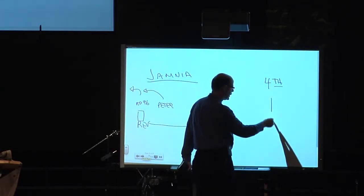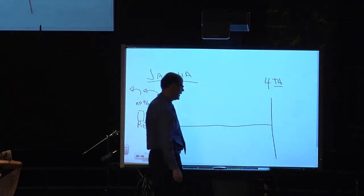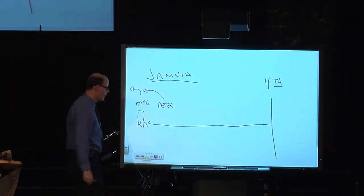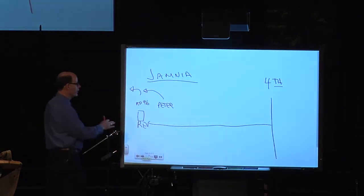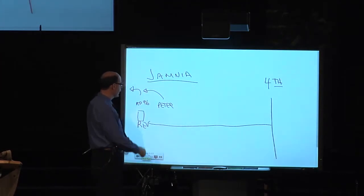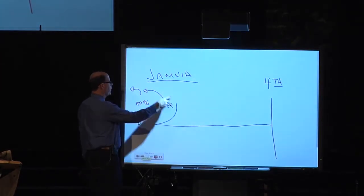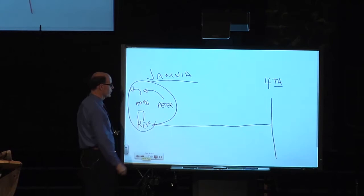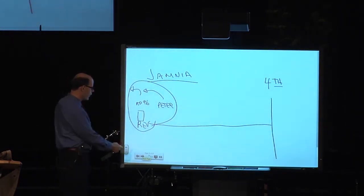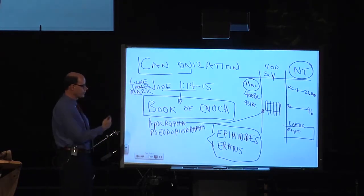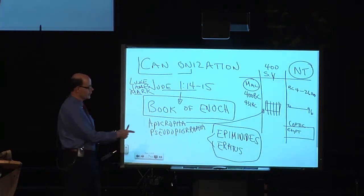Those 27 books were recognized by the church. And finally they had a council that said that they were canonized in about 431 or so. But, and Jamnia before that, but the church had believed that they were apostolic from when they were written.